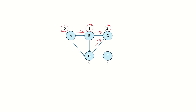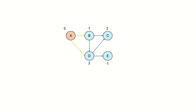We begin with the vertex with in-degree 0, which is A. Why do we choose that? A vertex with in-degree 0 shows that there is no dependency on A — there is no incoming edge — meaning A can be performed first. A is a task which can be performed first, so A should come first in the topological ordering. So we choose A.